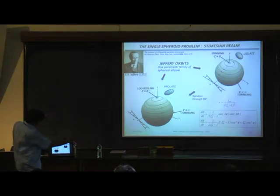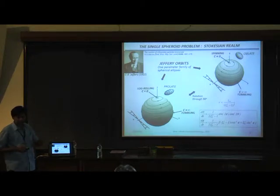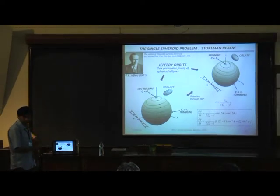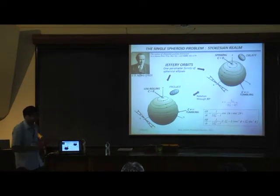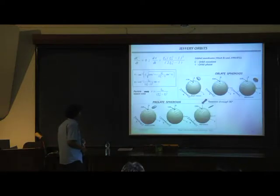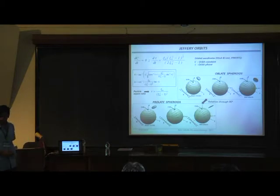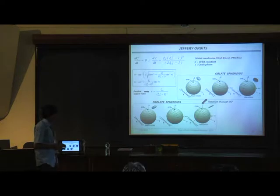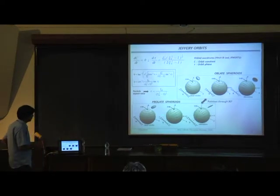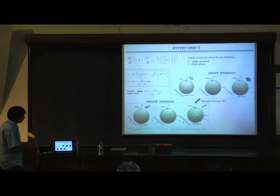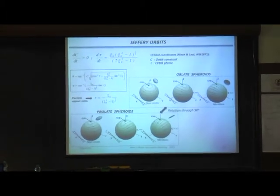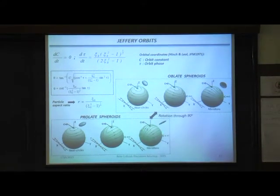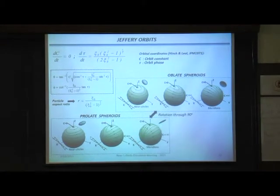The shape of Jeffrey orbits depends on the aspect ratio. For a sphere they are trivially circles, becoming increasingly distorted for extreme aspect ratios. For prolate spheroids going from near-sphere to a needle, orbits become enormously stretched, and in the limit of an infinitely slender fiber they become meridians connecting the two poles of the unit sphere along the flow direction. For oblate spheroids, similarly, starting from near-circles, as the spheroid flattens to a disk the orbits become meridians orthogonal to those of the prolate case.